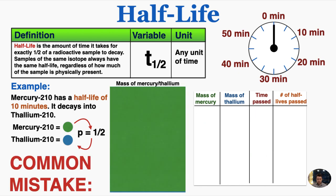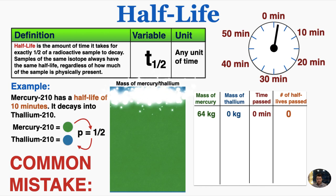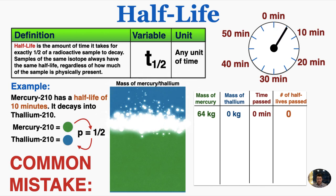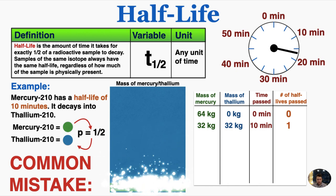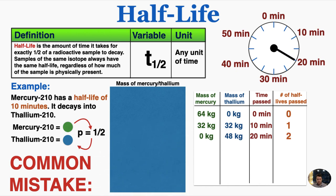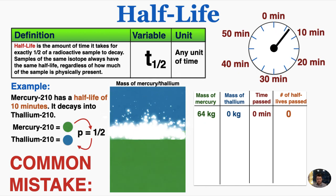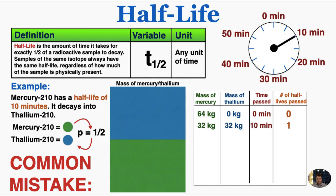Before we go on, I just want to alert you to a common mistake students make when they're first learning this. Some students will look at this situation and say, okay, if we have 64 kilograms of mercury and the half-life is 10 minutes, after 10 minutes pass half of it will decay, and after the next 10 minutes the other half will decay, so now there's none left. But this is incorrect. This is not what happens.